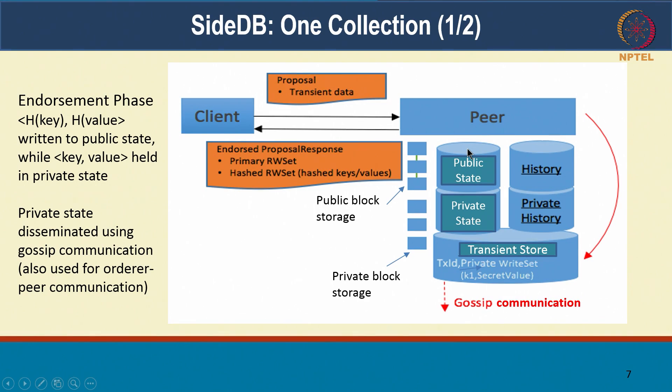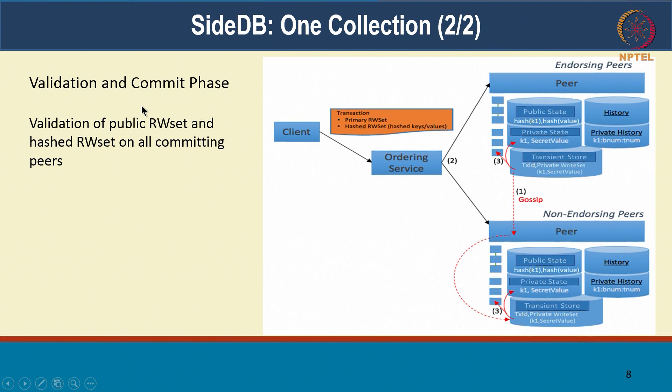The actual key-value of the private information is held in a separate database called the SideDB. There is public state information and private state, and these are held separately. The private state is then disseminated using gossip. The public state is part of the transaction and all the peers will get the transaction, but the private information is distributed using gossip in Fabric. After that, you have written the hash of the key and hash of value into the transaction, which ensures immutability, and there is a private data set that only a subset of the peers in the channel have. Validation of the public read-write set happens as before, and on all the committing peers the hash read-write set is also checked for version.